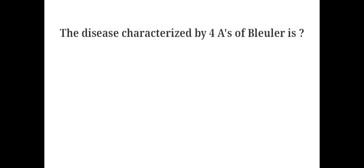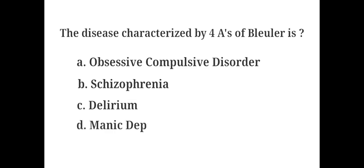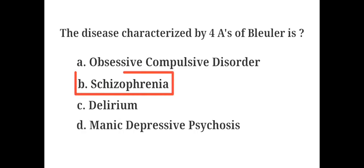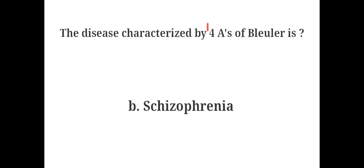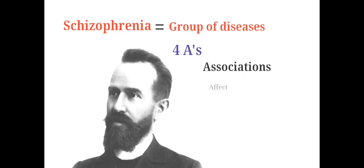The disease characterized by four As of Bleuler is: A. Obsessive compulsive disorder, B. Schizophrenia, C. Delirium, D. Manic depressive psychosis. The answer is B. Schizophrenia. Bleuler defined schizophrenia as a group of diseases rather than just one disorder. He defined the main symptoms as the four As: Associations, Affect, Ambivalence, and Autism.